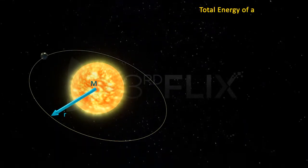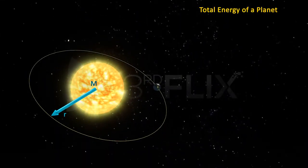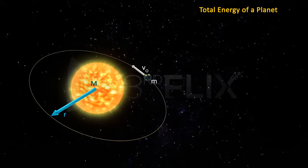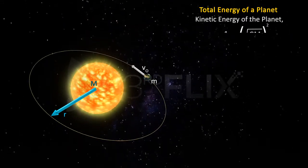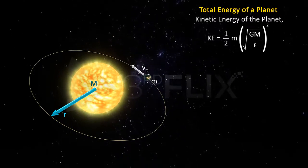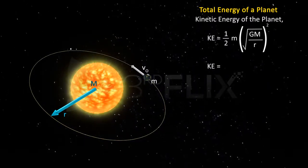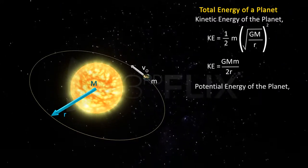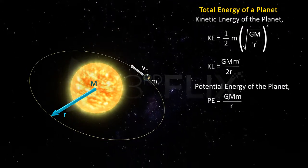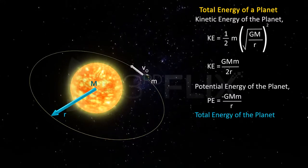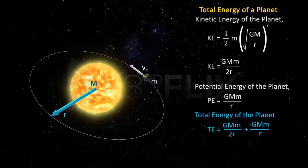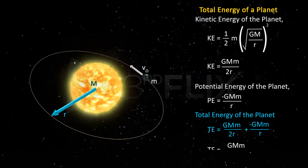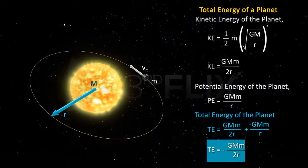Total energy of a planet: orbital speed equals √(GM/r), so kinetic energy of the planet is (1/2)m·(GM/r) = GMm/(2r). The potential energy of the planet is −GMm/r. The total energy of the planet equals the sum of its kinetic and potential energy, giving total energy = −GMm/(2r).